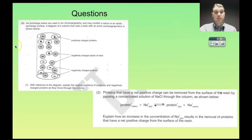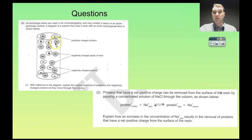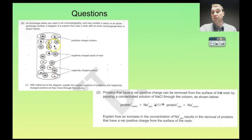Let's look at some questions. We have an ion exchange resin in a column with an anion exchange surface, meaning the resin has a negative charge on the surface. The question asks us to explain the relative positions of the positively and negatively charged proteins as they move through the column. The positively charged protein will stick to the negative surface charge of the resin and won't come through the column very quickly. The negatively charged proteins are repelled by the resin, so they will flow through the column relatively easily and come out at the bottom.